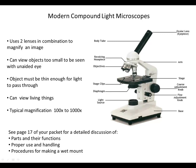The fine adjustment knob — the smaller of the two knobs — is for sharp focus. Typically, you're only going to use the fine adjustment knob when you're in high power. Conversely, the coarse adjustment knob would only be used when you're in scanning or low power. We never use the coarse adjustment knob in high power because it makes very rapid adjustments and you can easily break the lens or the slide. The base supports the microscope, and we use both the base and the arm when carrying the microscope.